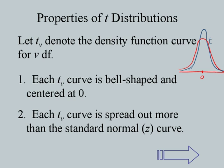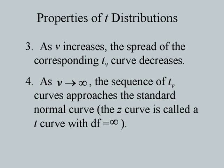As the degrees of freedom V increases, the spread of the corresponding T curve decreases — it slowly moves towards the shape of the normal curve. Finally, as the degrees of freedom tends to infinity, the sequence of T curves approaches the standard normal curve. In other words, the Z curve is a T curve with degrees of freedom infinity. For large degrees of freedom, T is essentially Z.